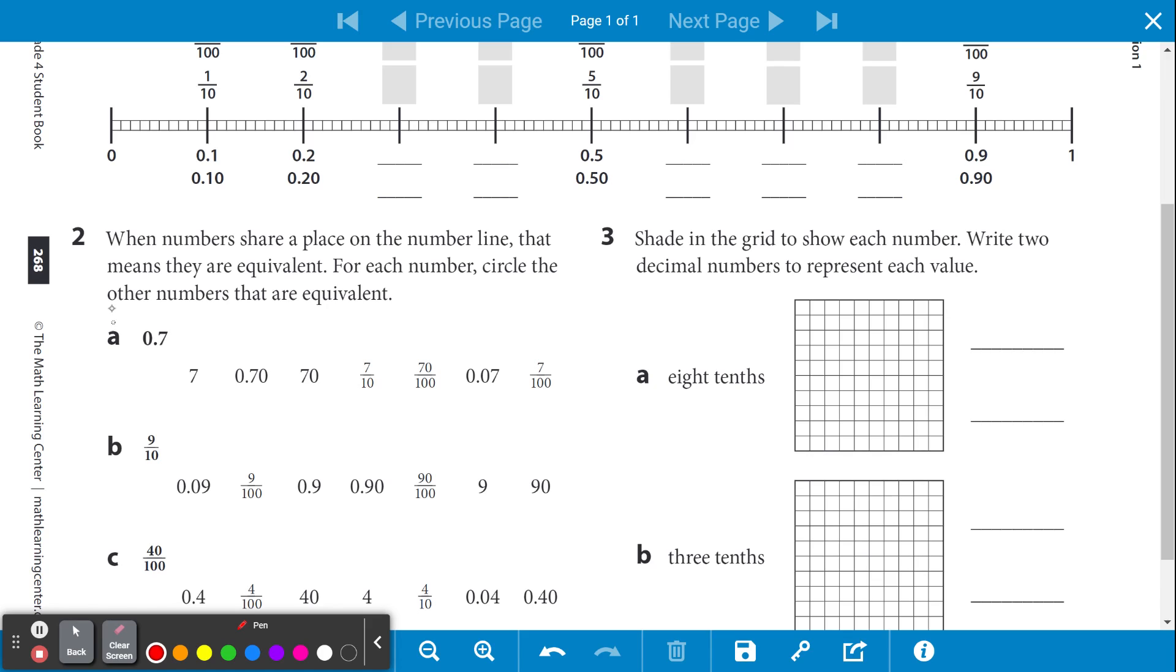So A reads as 0.7, which is 7 tenths, so we would circle this. It's also okay to write that as 0.70, which would be 70 one hundredths, which takes care of those two.